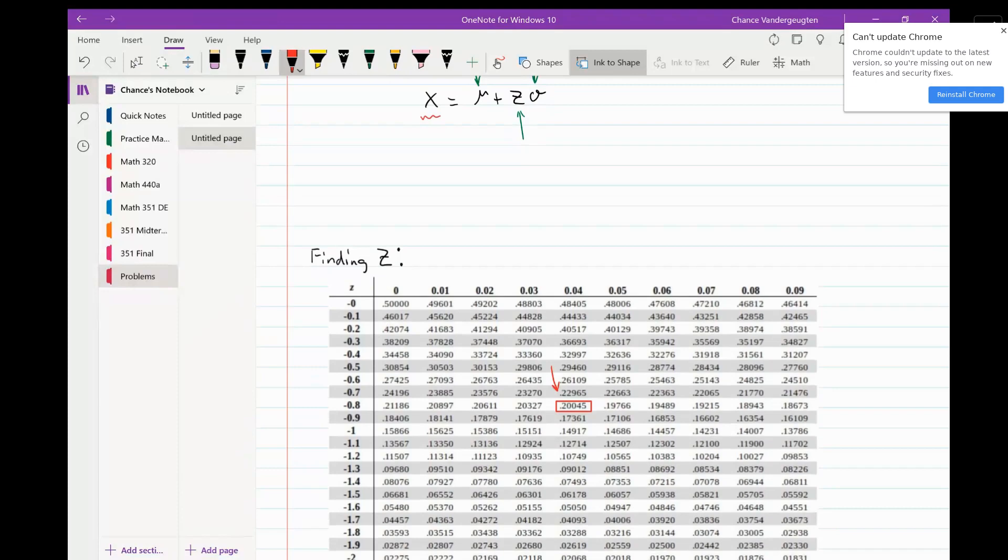If we follow the row here, we have negative 0.8. I know this is a little confusing because the top row is not in terms of negatives, but it just tells you what the next decimal is. So we end up with a z-score of negative 0.84.